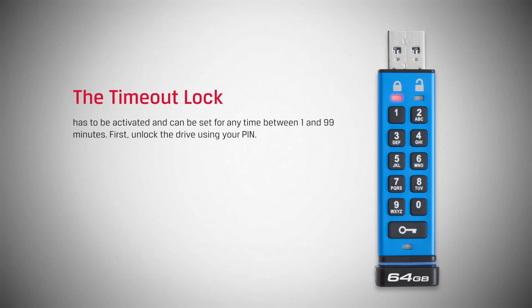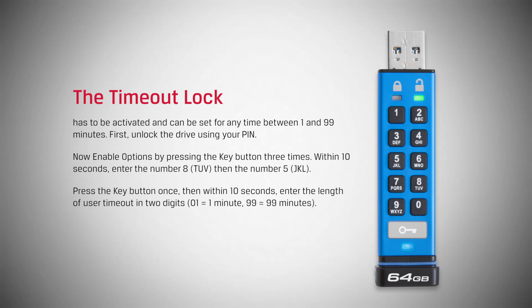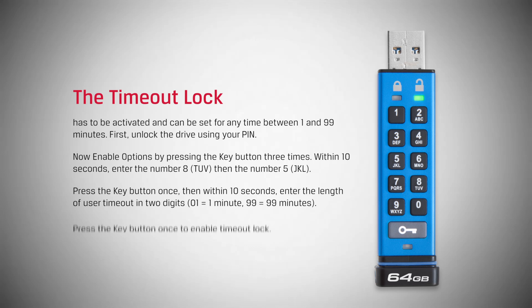First, unlock the drive using your pin. Now, enable options by pressing the key button three times. Within ten seconds, enter the number eight and then the number five. Press the key button once. Then, within ten seconds, enter the length of user timeout in two digits. Press the key button once to enable timeout lock.